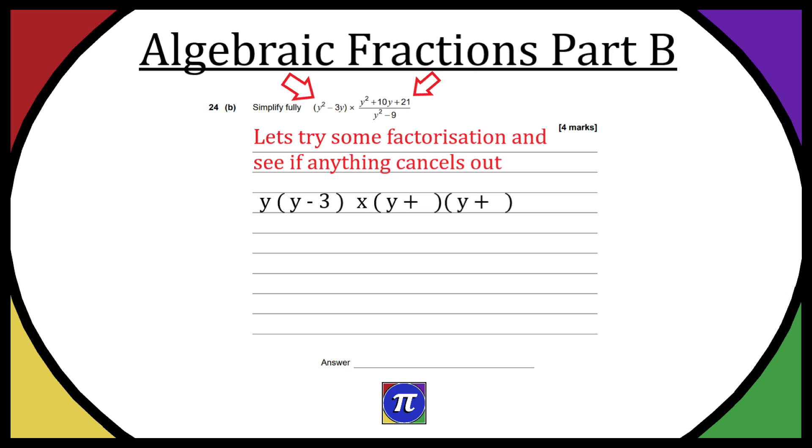...so they multiply to make 21 and add to make 10. Well, 3 times 7 is 21, and 3 plus 7 is 10, so that gives us (y + 3)(y + 7).